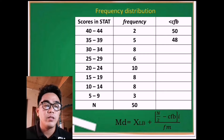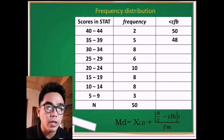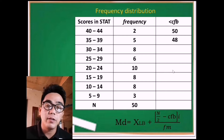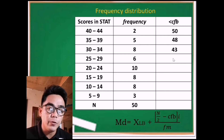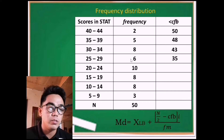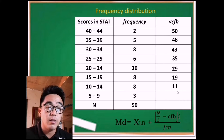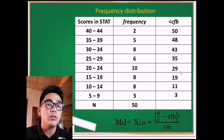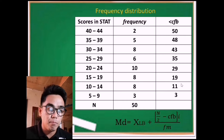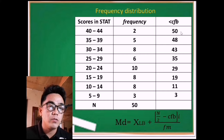Continuing the same process: 48 minus 5 is 43. For the 4th row: 43 minus 8 is 35. Then 35 minus 6 is 29, 29 minus 10 is 19, 19 minus 8 is 11, and 11 minus 8 is 3.